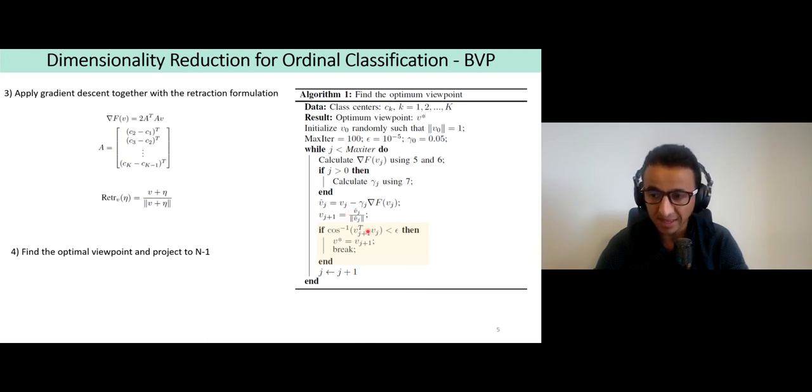For each new viewpoint obtained with the gradient descent, a comparison between the obtained viewpoint and the previous one is done based on this arc cosine function. If the result is less than the threshold selected initially, the optimal viewpoint is selected as the best one and the projection is done. If not, we follow the gradient descent until an optimal viewpoint is selected. Once the viewpoint is selected we project instances from n to n minus one, and the process is repeated until we reach the target dimension.